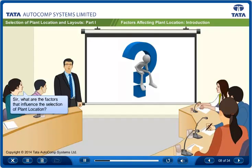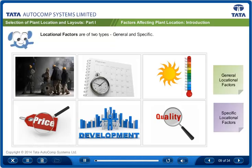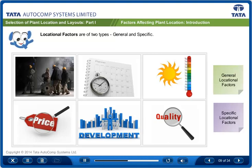What are the factors that influence the selection of plant location? Locational conditions are not very easy to measure, and so it is appropriate to divide the factors into two different categories.